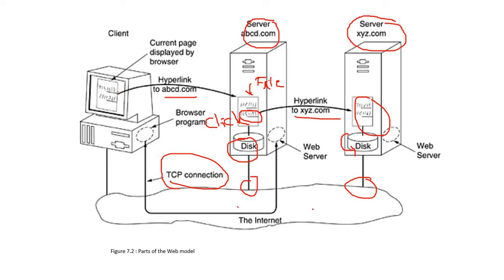Whatever we are accessing, we are accessing it from the internet. We have already discussed that the internet is a collection of different networks — home network, mobile networks, enterprise network — all connected with each other forming the internet. Internet means one network communicates with another network.